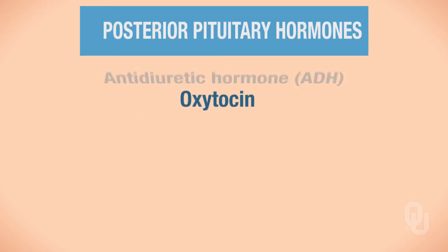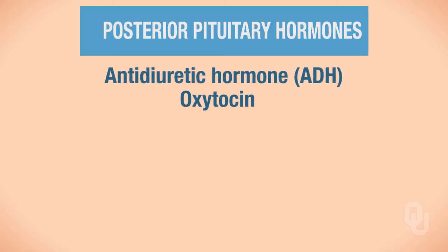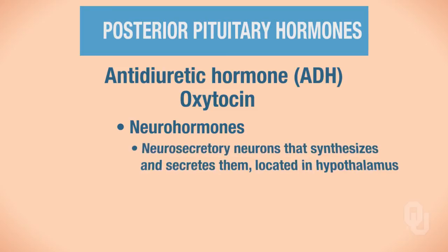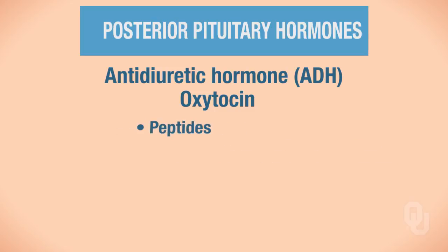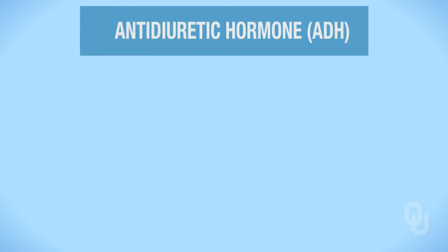Both ADH and oxytocin are functionally classified as neurohormones. They are classified as neurohormones because of the neurosecretory neuron that synthesizes and secretes them — that neurosecretory neuron is located in the hypothalamus. Chemically, both of these hormones are classified as peptides. Now let's focus in more detail on antidiuretic hormone.